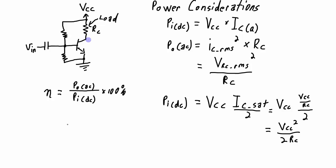So my maximum output power is going to occur when my voltage across RC is at the max. And the current through RC is also at the max. And of course these are RMS. And so that maximum RMS value is going to occur when